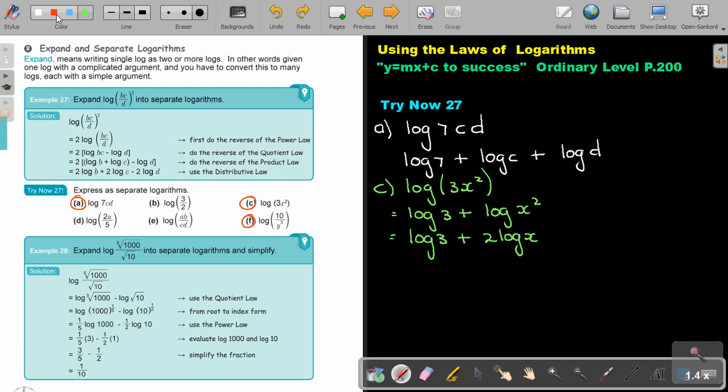And then number f. This will be log 10 over y³. That will be log 10 minus log y to the power 3. Because it's division, it's subtraction. And then separate it further to log 10 minus 3 log y. So this is going to give me, if I look at this final one, log 10, I could have even gone and said this was 1 minus 3 log y. But it's not necessary. I can leave it like that. And that's the final answer.